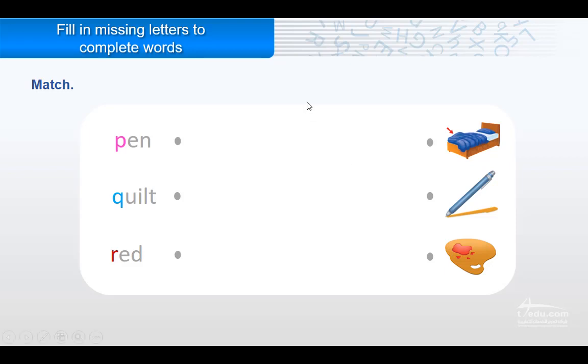Pen, quilt, red. Where are they? What should I start with? P, Pen. Q, Quilt. R, Red. Nice, wonderful.